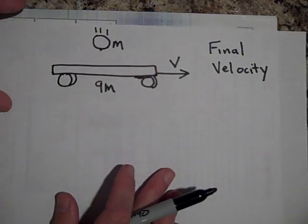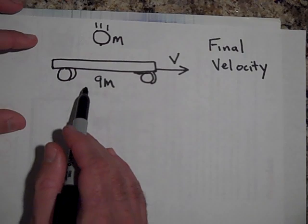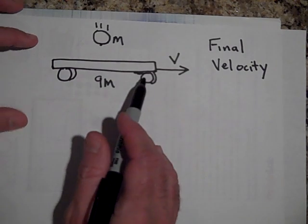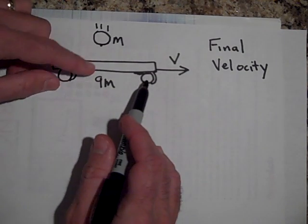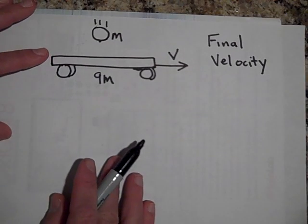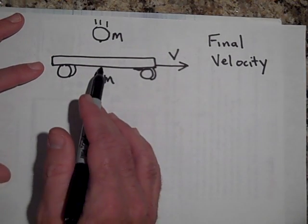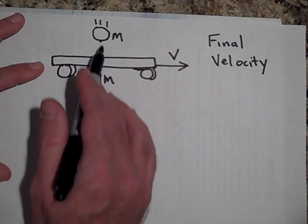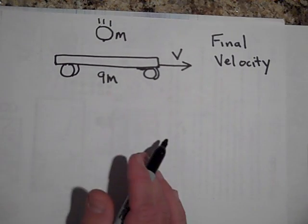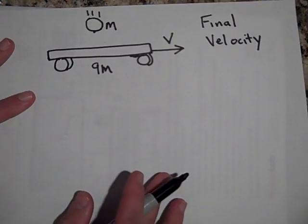Okay, we have a cart of mass 9m moving along with speed v, and here comes a bag of sand that's going to drop into it. What will be the final velocity of the cart after the bag of sand lands in it? Go ahead and pause and try to figure it out.